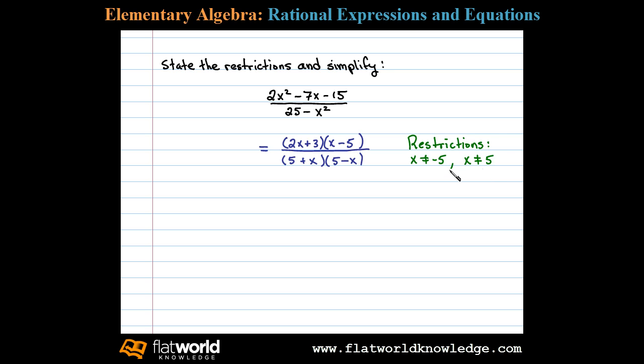Once we make note of the restrictions, we can then cancel. Here I notice we have opposite binomial factors. We can cancel if we first factor out negative 1. Factoring out a negative 1 will leave us with x minus 5. Now we can see x minus 5 cancels.